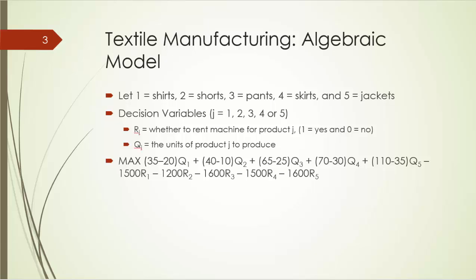We are going to define our decision variables as follows. First, we have to decide whether to rent a machine. So we define rj as whether to rent a machine for product j — one means yes, and zero means no. We also define qj as the units of product j to produce. The tricky part is that how many units of product j we can produce is constrained by whether we are going to rent the machine for this product. If we choose not to rent the machine, there's no way we can make any unit of this product.